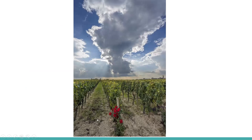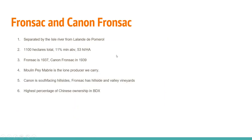The Lalande de Pomerol AOP uses La Lande de Pomerol and Néac as its two communes of production, sitting on the northern side of the Barbonne River. It has the same 11% ABV and 53 hectoliters per hectare yield, with a March 31st release date. The soil is similar to Pomerol but lacks as much of that crasse de fer that we look for in the quality wines.